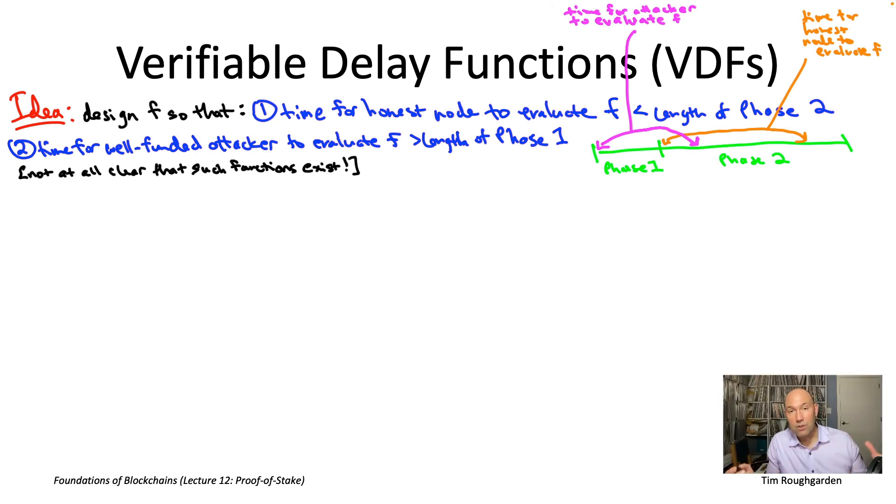So specifically, we'd like honest nodes to be able to evaluate it in a reasonable amount of time using a reasonable amount of computation power. Our phase two duration has to be at least as long as what honest nodes need to be able to evaluate it.